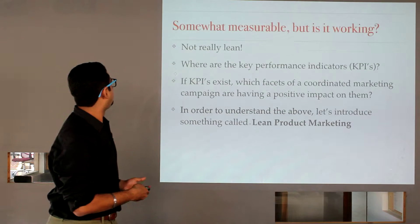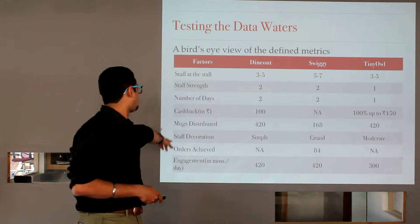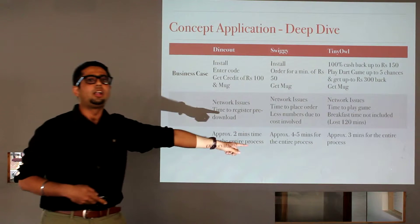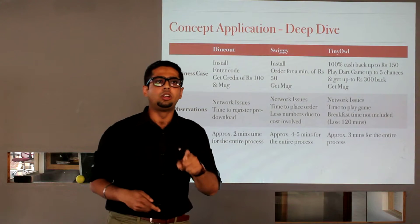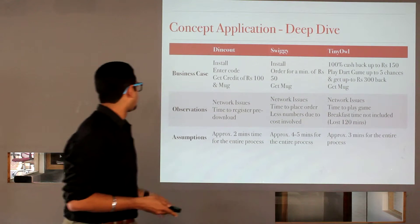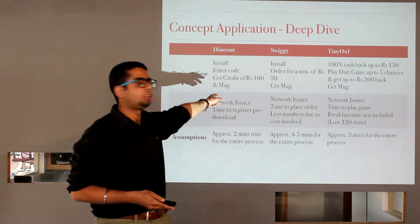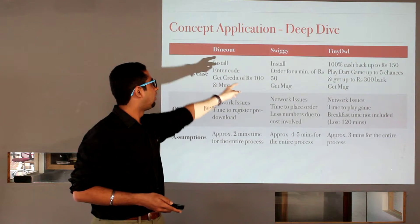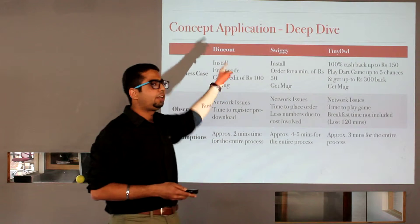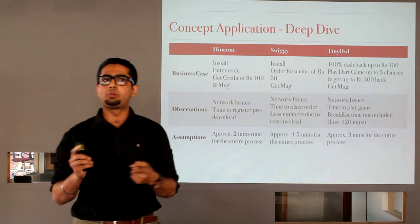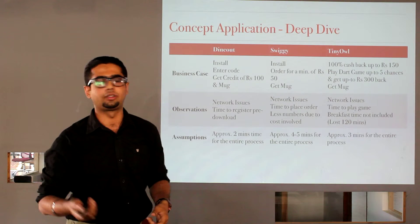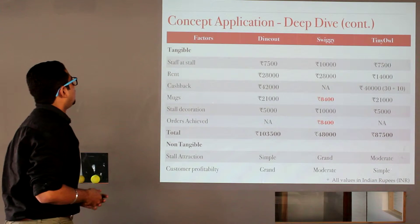Now, I pointed out a few metrics here. The mugs distributed and the orders achieved. So, this was done through the observations made of how much time each brand took to register and give a coffee mug to one individual consumer. That was approximately two minutes for DineOut, four to five minutes for Swiggy and three minutes for TinyOwl. The longer time period for Swiggy, why? Because they had to ensure that a Rs.50 order had to be placed. And they had to recheck that before they could issue a coffee mug. So, let's get into some cost analysis.